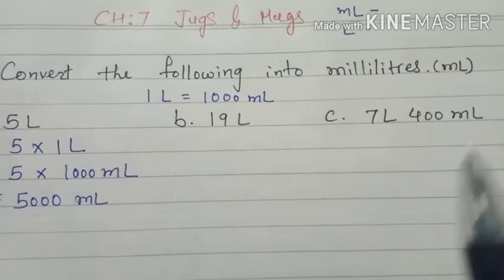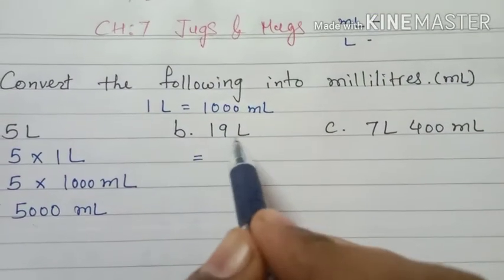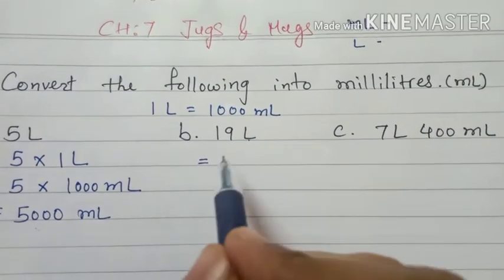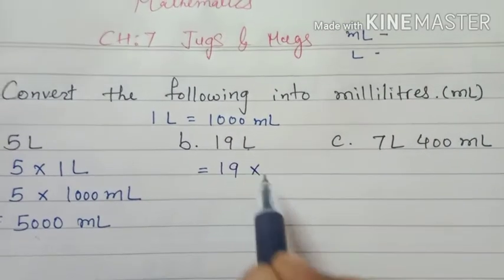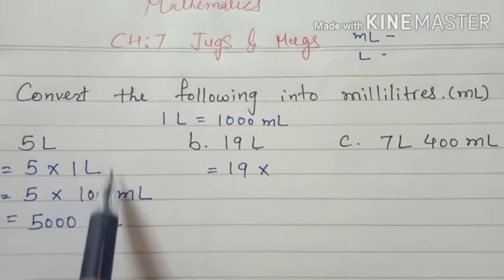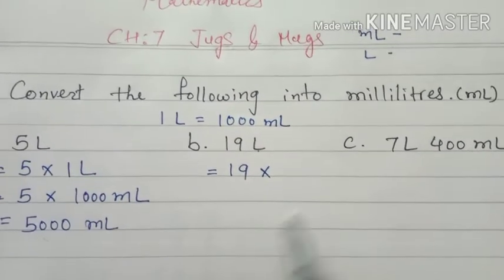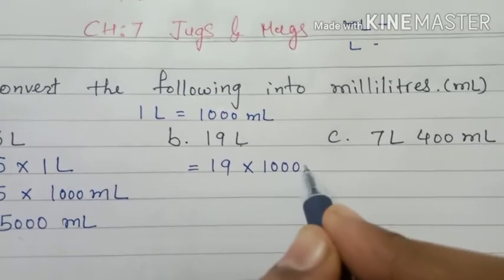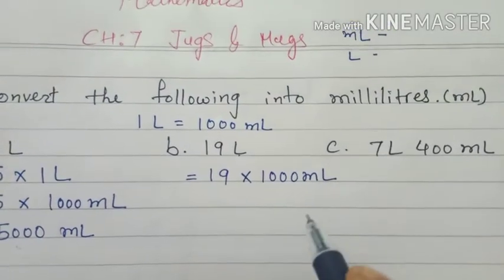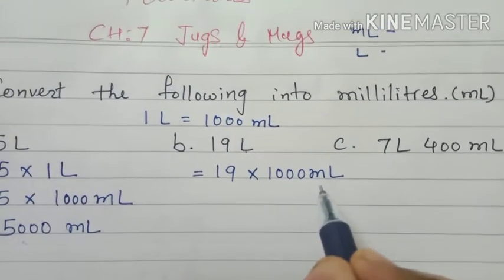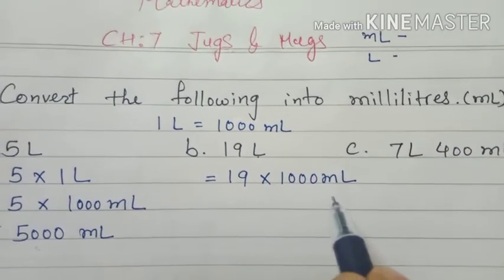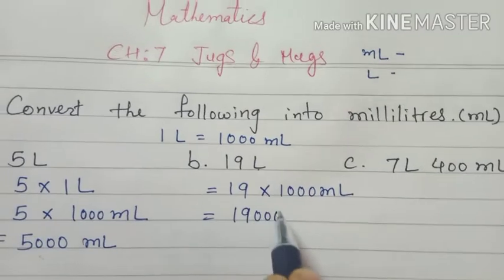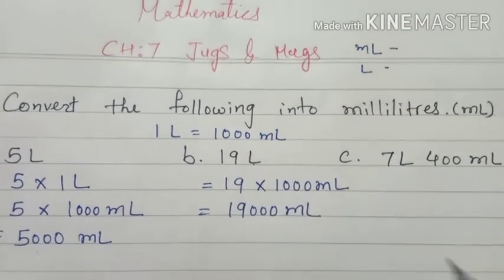Next example: 19 liters. Convert liters to milliliter — so we multiply. We don't have to write 'one liter' every time. Now you know that one liter means 1000 ml, so directly multiply by 1000 ml. So 19 multiply 1000 is nineteen thousand milliliters.